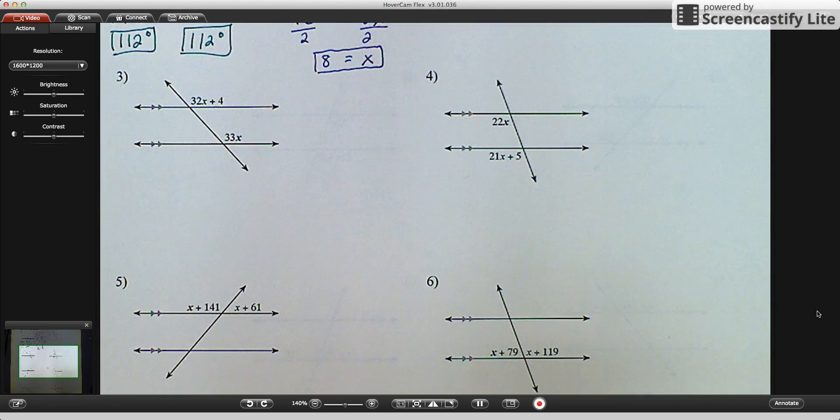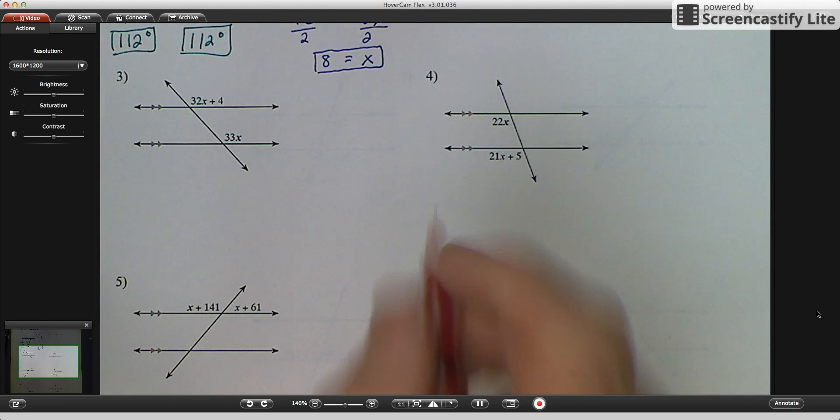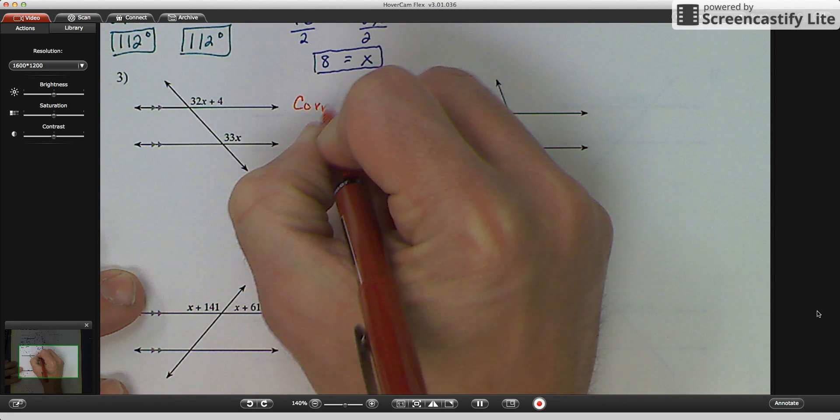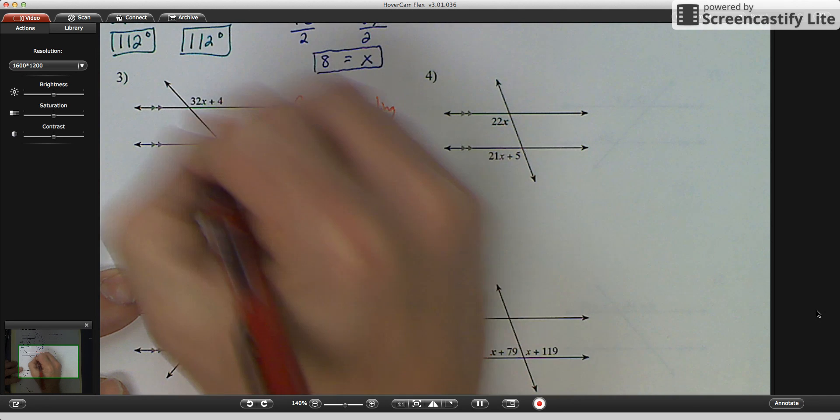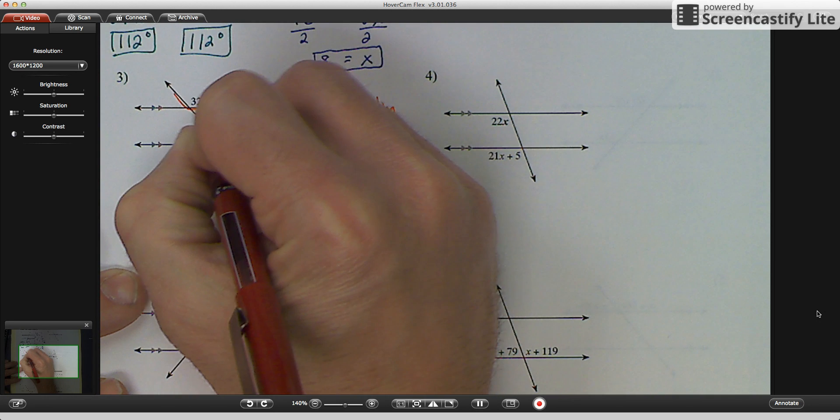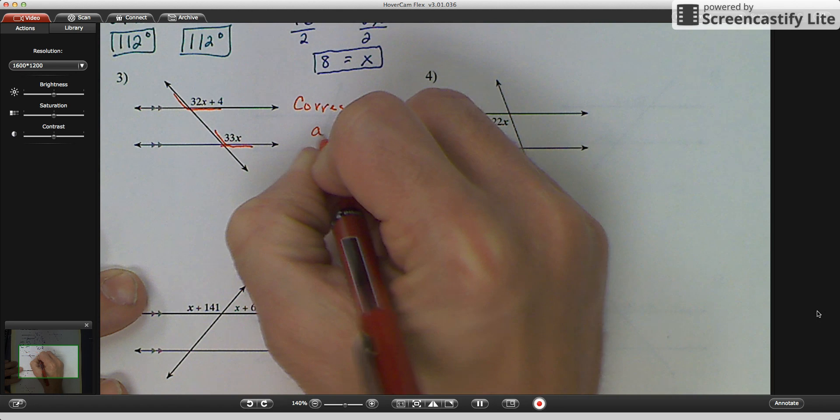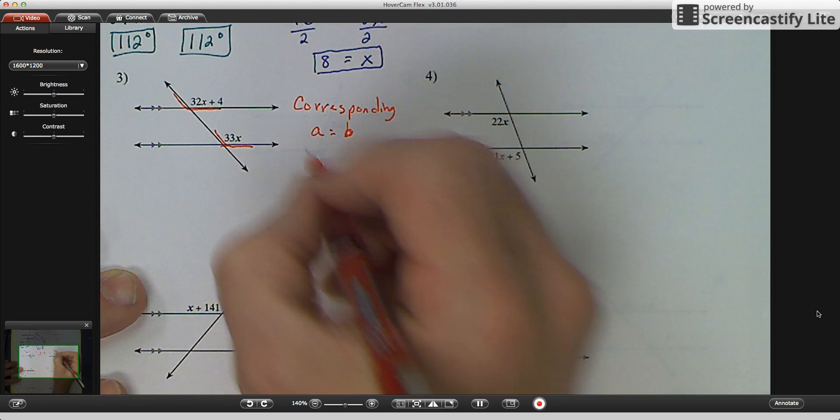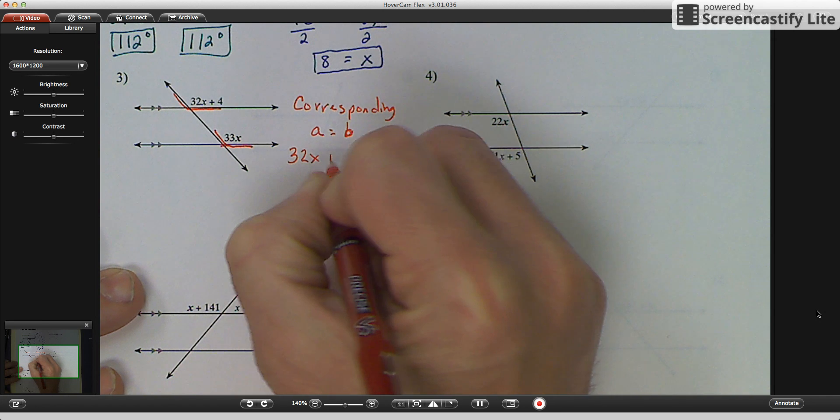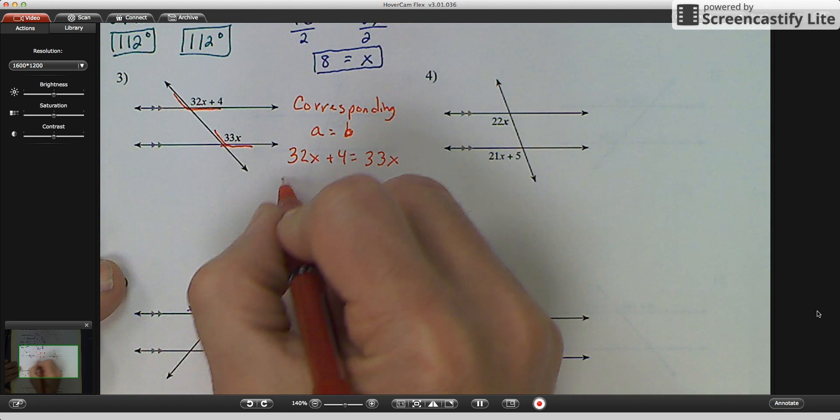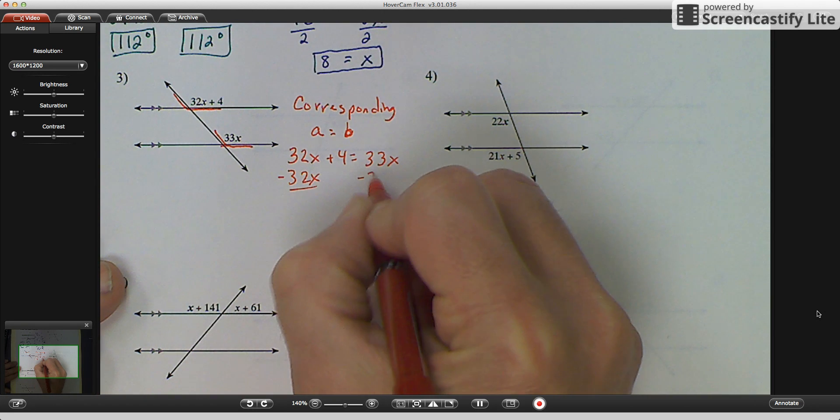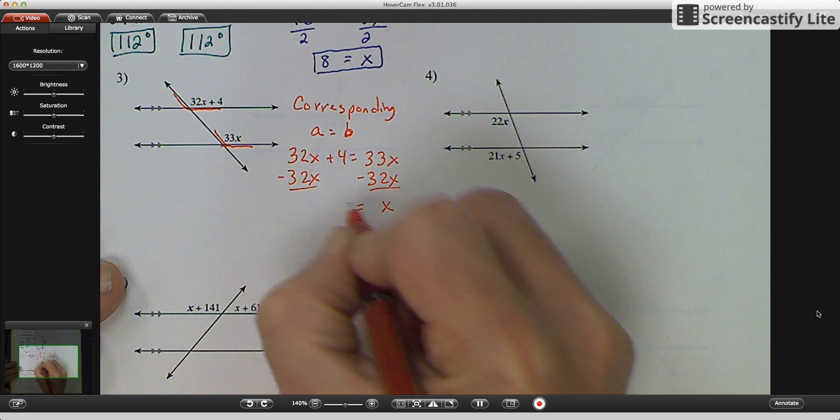Number three, I look at this. Again, I only have three possible answers: linear pair, vertical, and corresponding. And I notice, based on our notes today, that it is corresponding. So I'd write corresponding. I also know that corresponding angles are congruent because they're both obtuse angles. So the formula is A equals B. And then I would write my equation 32x plus 4 is equal to 33x. And then I solve that equation by subtracting 32x from both sides. And you get x equals 4.